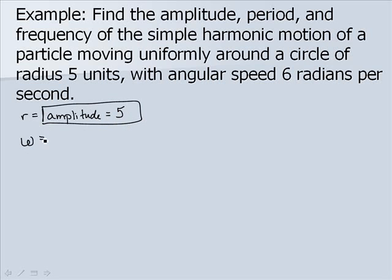The angular speed, we were told, is 6 radians and our period, remember, is 2 pi over omega, or the angular speed. So we have 2 pi over 6, which will give us a value of pi over 3 for our period.